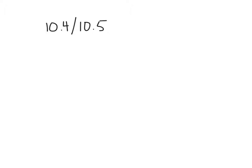First of all, this unit starts talking about an inscribed angle, and it's important to understand the inscribed angle. In the beginning of this unit you had an angle that was at the center of the circle — that's called a central angle because it's at the center of the circle. With the central angle, whatever the degree of the angle is, that's the degree of the arc. The arc just goes to the opening of where the angle opens to — that's the degree of the arc.